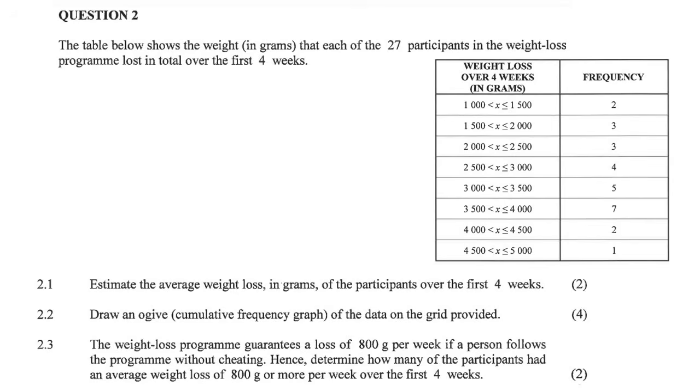The table below shows the weight in grams that each of the 27 participants in the weight loss program lost in total over the first four weeks. So there are two people who lost between 1,000 and 1,500 grams, for example, and then there are five people who lost somewhere between 3,000 and 3,500, and then there's one person who lost 4,500, or somewhere between 4,500 and 5,000 grams. That's sort of how that table's working over there.